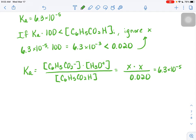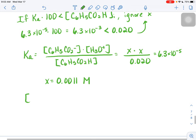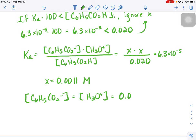With a little bit of algebra we can find that x is 0.0011 molar. So what does that mean? That means that our equilibrium concentration of both the benzoate ion and the H3O plus, since they are both x, they're both 0.0011 molar.